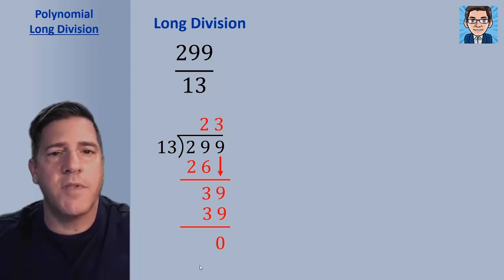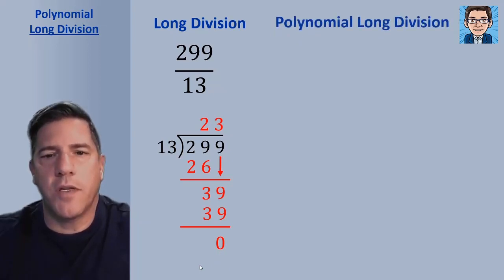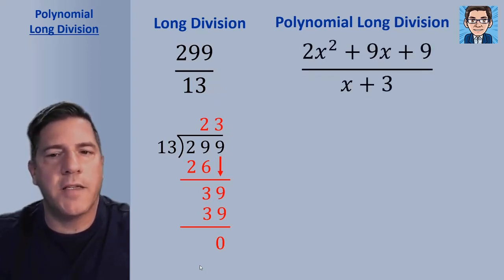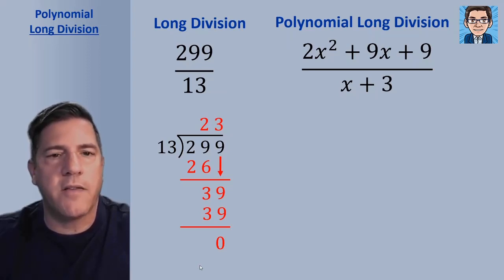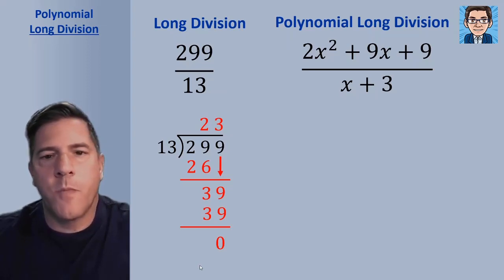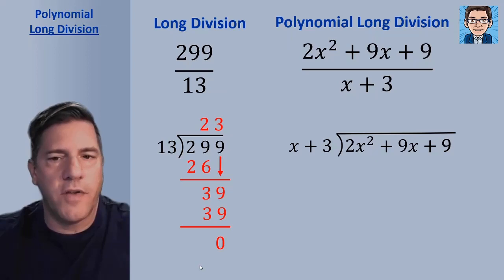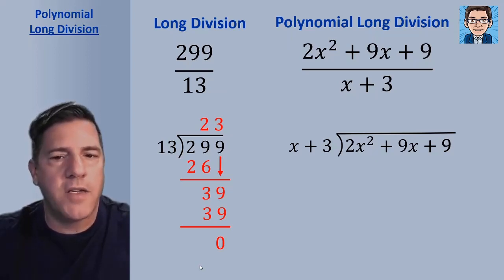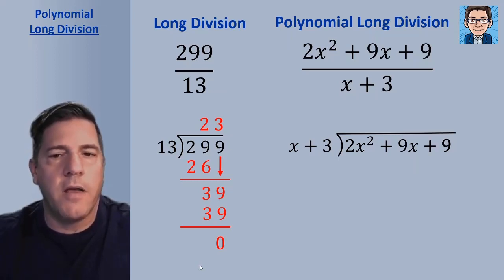Now we can do these exact same steps with polynomials. So let's take a look at what that would look like for polynomial long division. If we have 2x squared plus 9x plus 9 divided by x plus 3 — notice that's the same exact thing as the number we were dividing if x was 10. Set it up as a long division, and the first thing we need to do is how many times does x go into 2x squared? What can we multiply x by to get 2x squared? And that's going to be 2x.